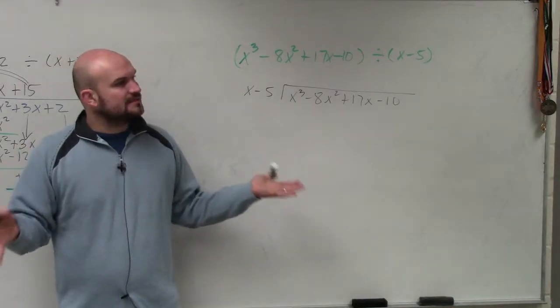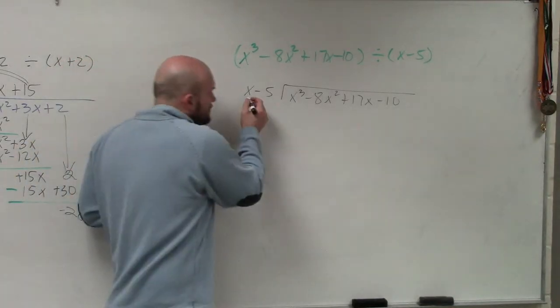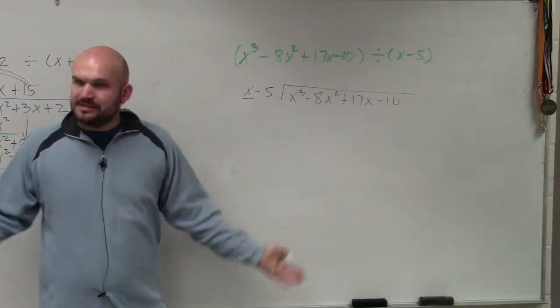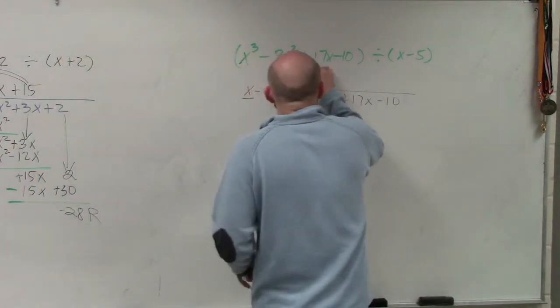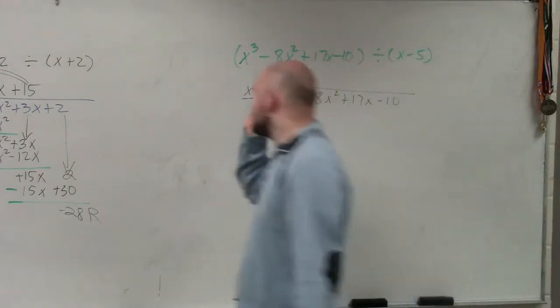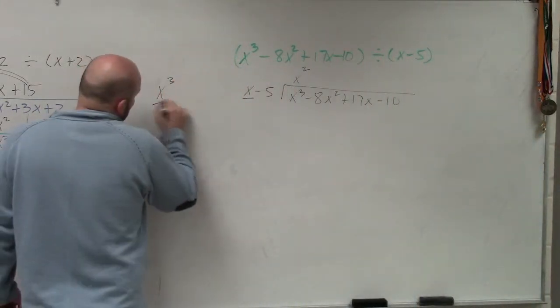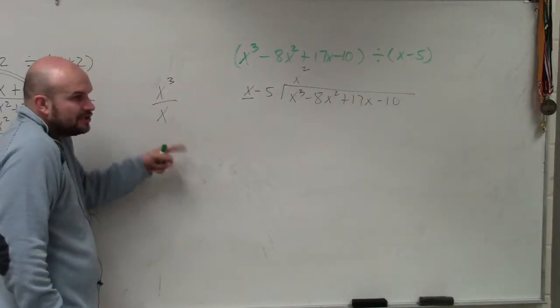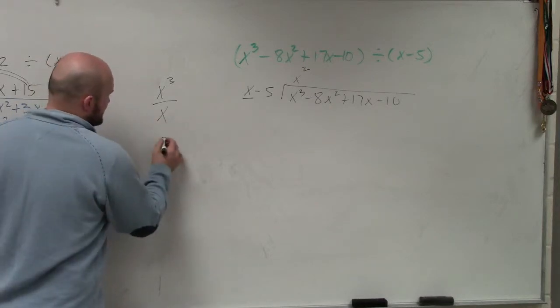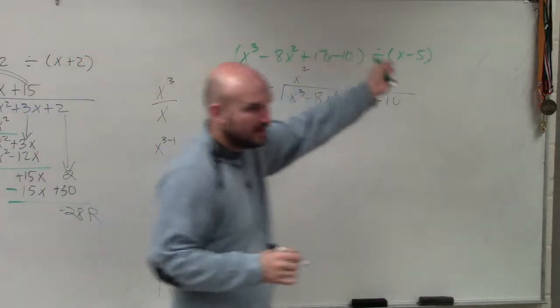Now we just go through this systematically. We choose our first term, x. x divides into x cubed how many times? x squared. The reason why is you can think of it this way: x cubed divided by x. How many times is x divided into x cubed? What do we do with the powers? We subtract them. So that's x to the 3 minus 1, which is x squared.